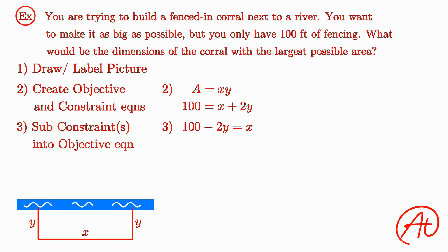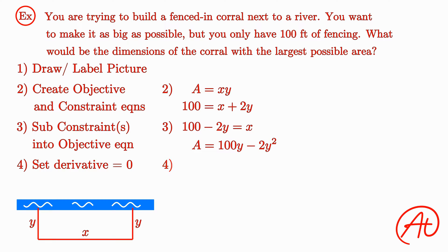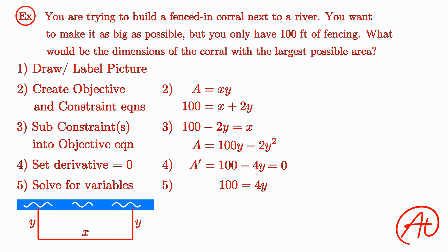Now that we have that, our next step is to substitute it into our objective function. As a result, we get that our new area function is (100 minus 2y) times y. Now we have an equation with just one variable and can take the derivative. Let's multiply in the y to get that the area equals 100y minus 2y squared. Using the power rule, we find that the derivative is 100 minus 4y. Since we want to find where the area is maximized, we set the derivative equal to zero and solve. We can add 4y to both sides to get 100 equals 4y, then divide by 4 to get that y equals 25.